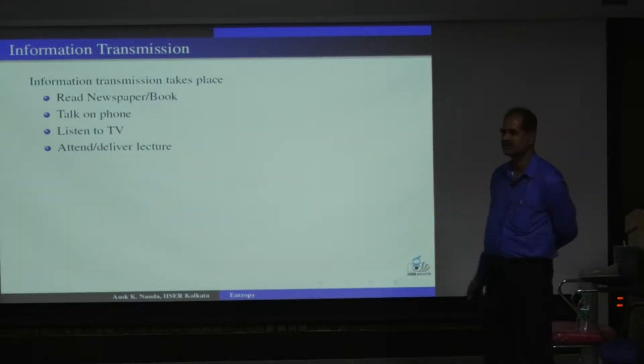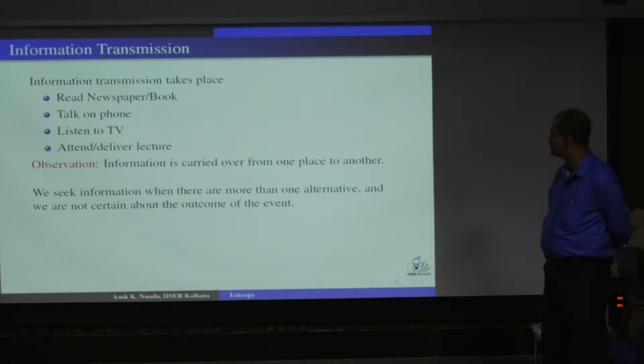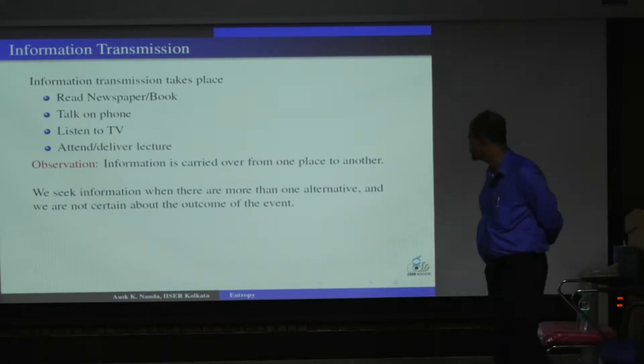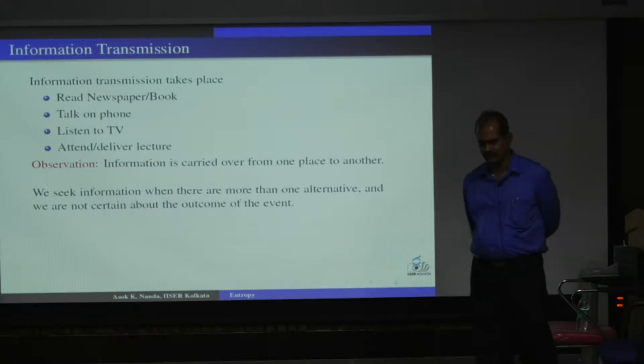Information is carried over from one place to another. When we seek information, we seek it only when we have more than one way of happening some event. If we know that something happens in a unique way, then there is no question of uncertainty, and no information is called for as such.